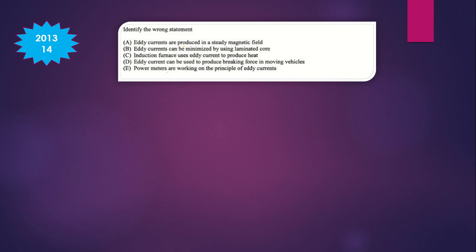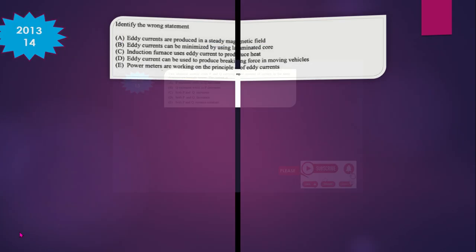Question 14: Identify the wrong statement. 'Eddy currents are produced in a steady magnetic field' — this is incorrect, because eddy currents are only induced when the magnetic field is changing. So the wrong answer is choice A.